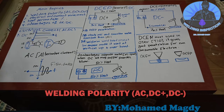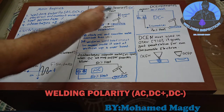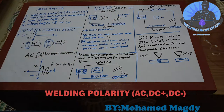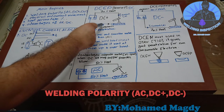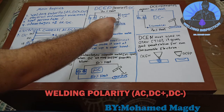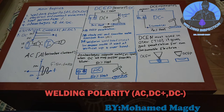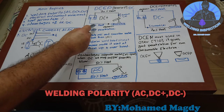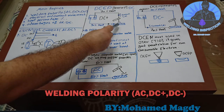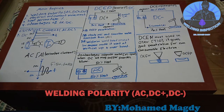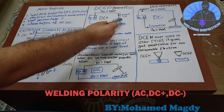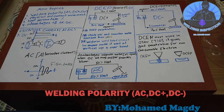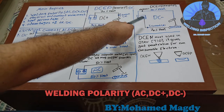In direct current electrode positive, current moves from positive to negative, but electrons move in the opposite direction — from the anode (negative) and move through the gap to the positive — leaving 30% of heat in the workpiece and 70% of heat at the electrode.